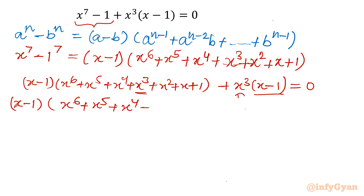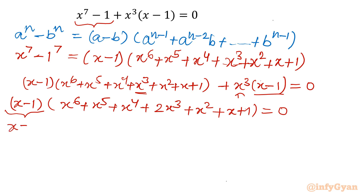So I will write 2x cubed plus x square plus x plus 1 equal to 0. Now one solution is clear, so I will write x equal to 1 is our solution. Now we will take up only the hexic equation, this polynomial of degree 6. Because we are getting all signs positive, one solution would be negative for sure.